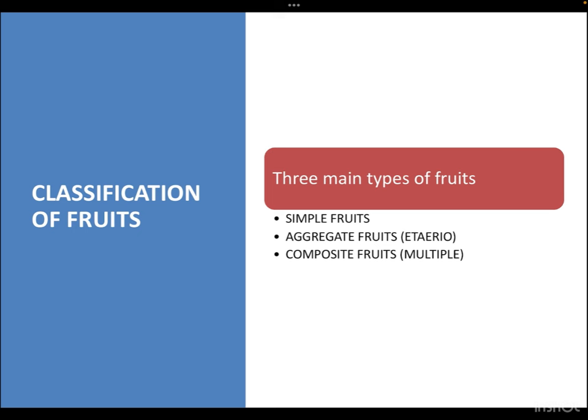When we classify fruits, we get three basic classes: simple fruits, aggregate fruits, and composite fruits.